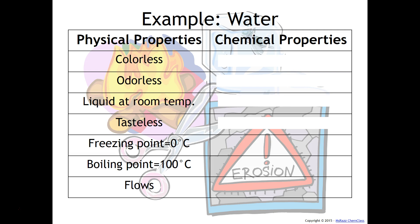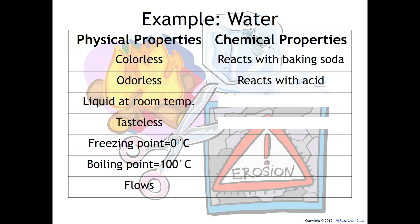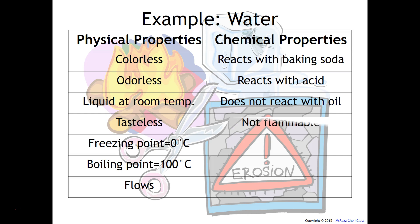The chemical properties of water, on the other hand, require some change to the chemical composition. For example, water reacts with baking soda and water reacts with acid. These are all examples of chemical changes — things we observe that change the chemical composition of water. Water does not react with oil and is not flammable. Again, all examples of chemical properties of water.